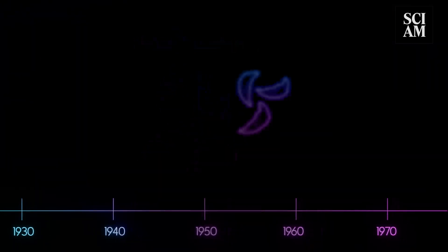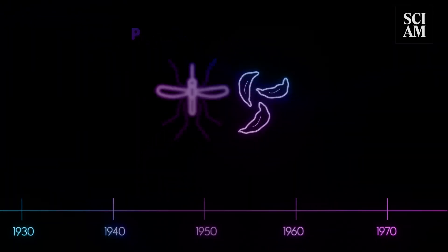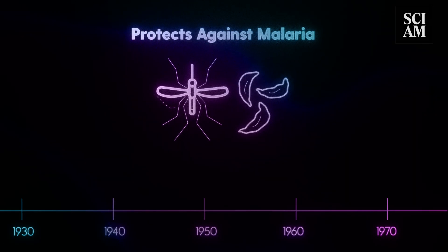In 1954, new research found that the sickle cell trait protects against malaria, which explains why the disease is more common in regions of Africa, where the prevalence of malaria was historically high.